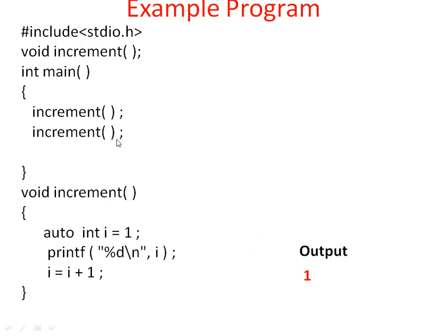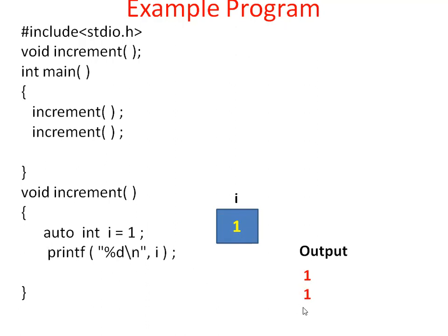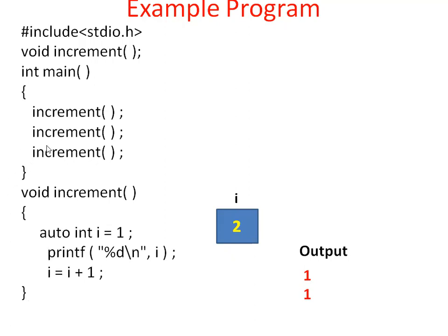The second time I am calling the increment function, the function is entered fresh and executes. Since the function is entered freshly, the statement auto int i = 1 is executed as if it is a new function call. So this statement is executed once again — memory is allocated for i and this memory is again initialized to 1. When you print i value on the output screen, you can see 1 printed because the current value of i is 1. Then i = i + 1, i value becomes 2. End of the function is reached and control goes back to main function. When control leaves this increment function, memory for i is removed.